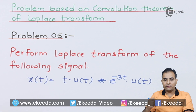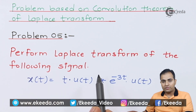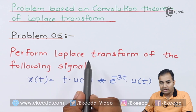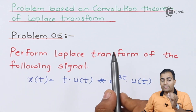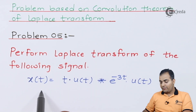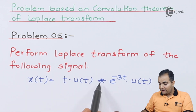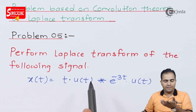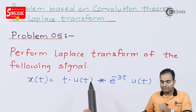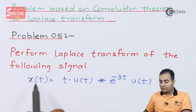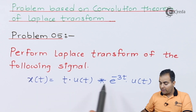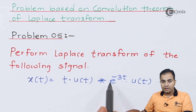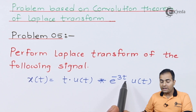In this question we are going to perform a Laplace transform of the following signal. It is not mentioned in the whole question statement to use the convolution theorem, but if you go through the statement the convolution sign is there, which means we have to perform a convolution theorem. The question is: x(t) = t·u(t) convolved with e^(-3t)·u(t).